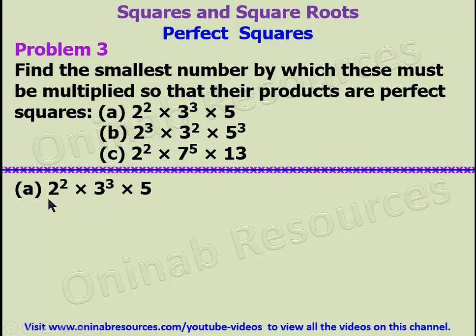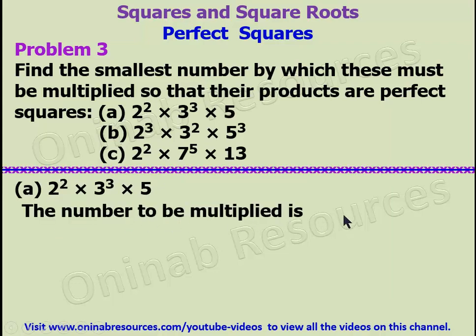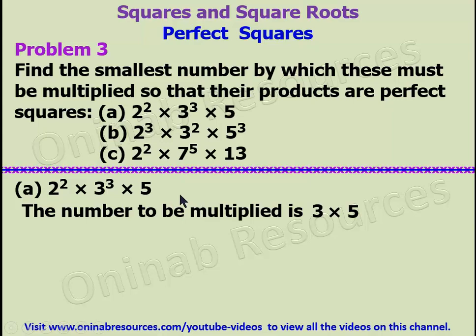Starting with part a: we look at each factor's index. For 2 raised to the power 2, the power is even, so that is complete. For 3 raised to the power 3, the power is odd, so we need to multiply by another 3. For 5, the power is 1 which is odd, so we need to multiply by another 5. Multiplying by 3 and by 5 makes both powers even. Therefore, the number to be multiplied is 3 times 5, which gives 15.